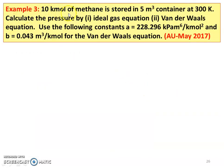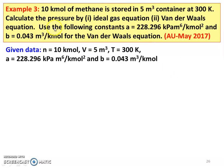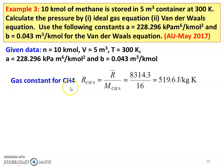Example 3. 10 kilomole of methane is stored in a 5 m³ container at 300 Kelvin. Calculate the pressure by ideal gas equation and Van der Waals equation using the following constants: A = 228.296 kPa·m⁶ per kilogram-mole squared and B = 0.043 m³ per kilogram-mole. This is a May 2017 question. Given data: N = 10 kilomole, V = 5 m³, T = 300 Kelvin, A = 228.296, B = 0.043. The gas constant for CH₄: R_CH4 = R-bar / M_CH4.